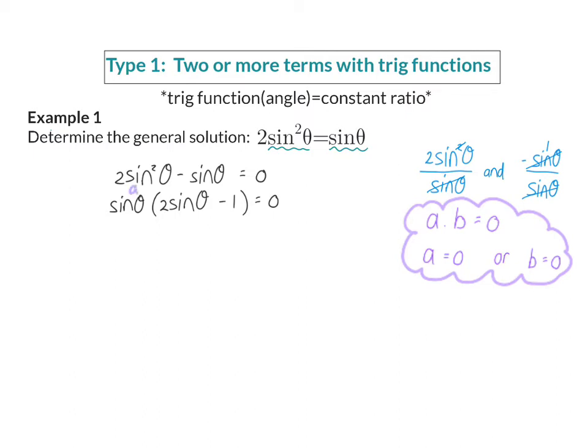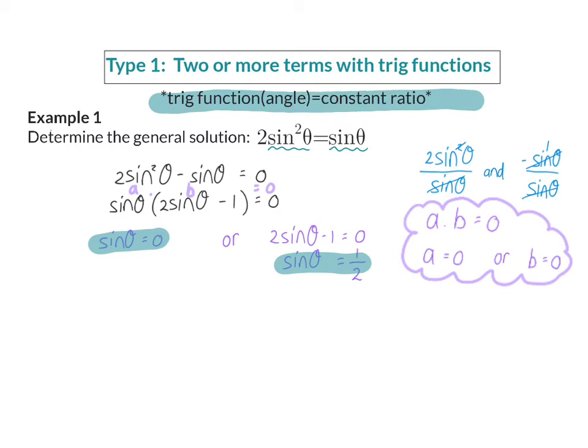We have a times b is equal to zero, and therefore we can break it up into the first factor, which in our case is sin θ can be zero, or b, which we have as 2 sin θ minus 1, can be equal to zero. In my second equation, I can now get sin θ alone by adding 1 on the right and then dividing by 2. And now we've managed to get two equations into our standard form of trig function, angle equal to a constant ratio. And now for both of these equations, we can follow the normal steps.